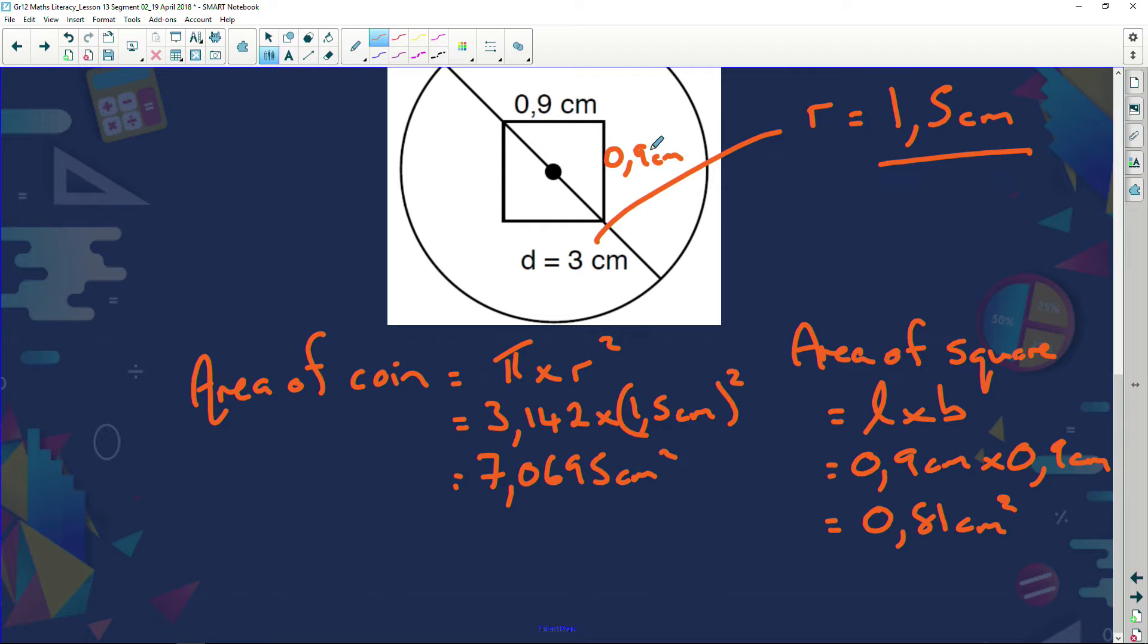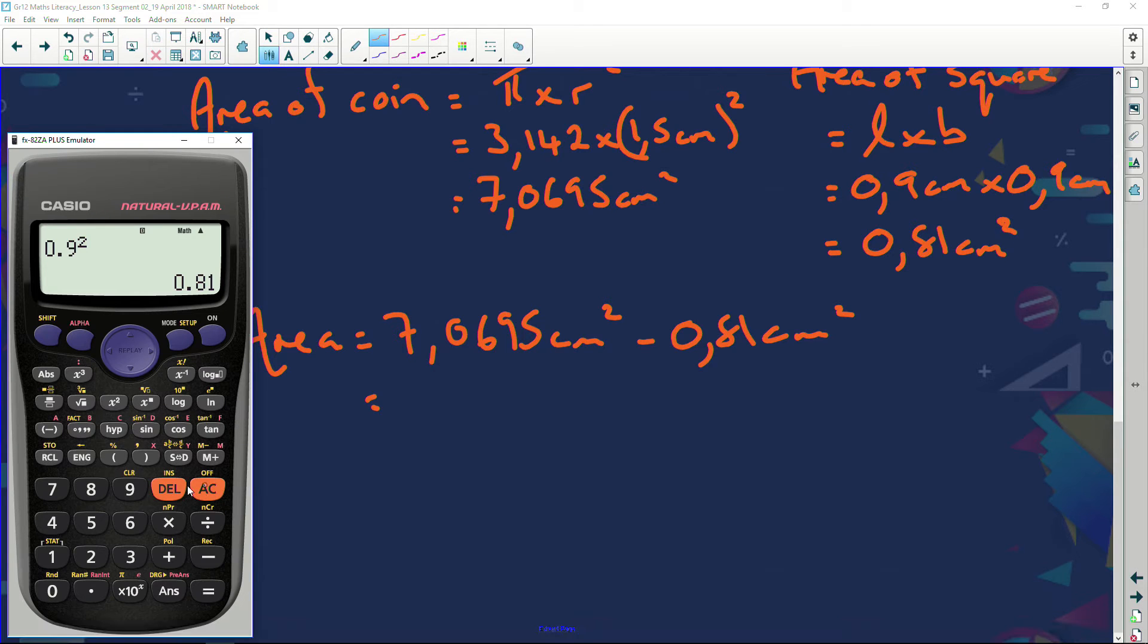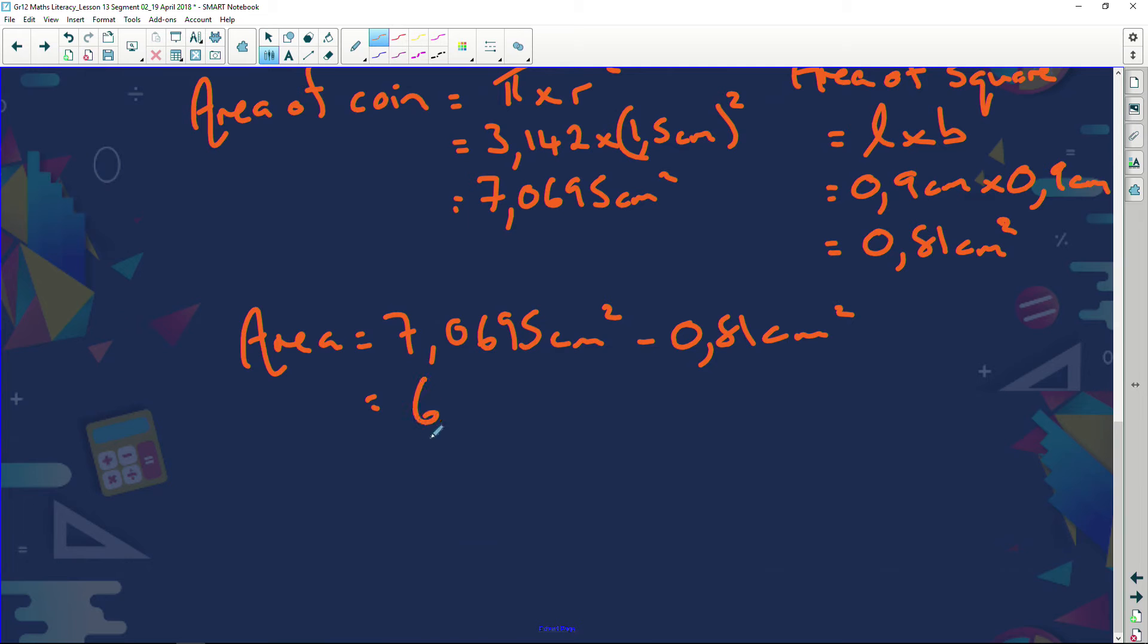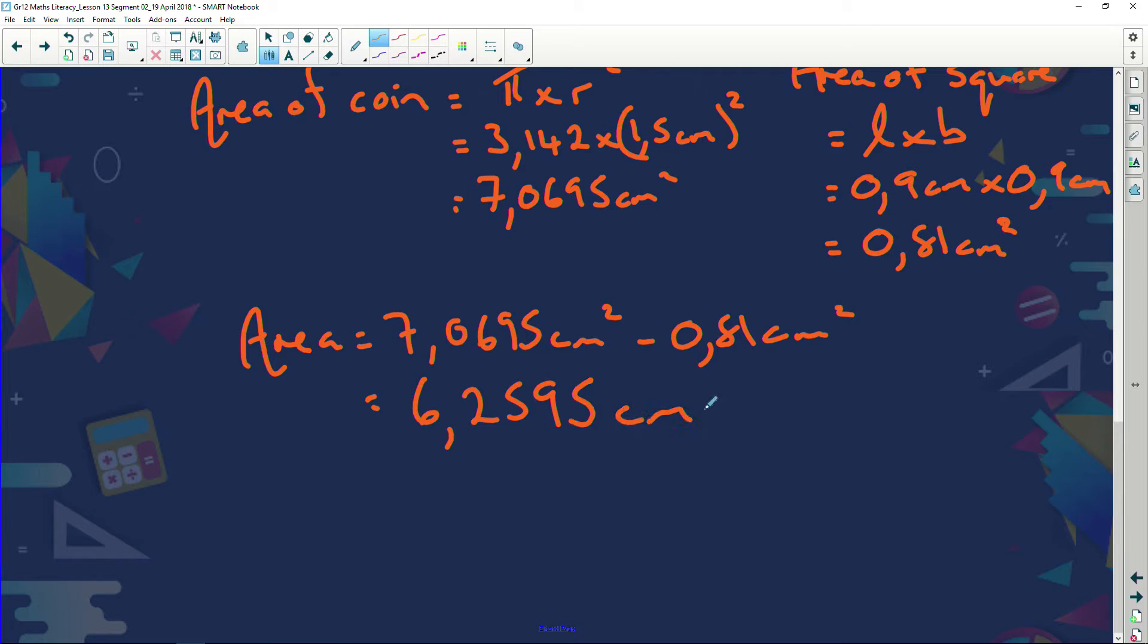Right. So we've calculated the area of the circle. We've calculated the area of the square. Let's now calculate the area of the leftover coin. So we're going to say the total area, or area left, is going to be 7.0695 centimeters squared minus 0.81 centimeters squared. Calculator 7.0695 minus 0.81 equals. And my answer is 6.2595 centimeters squared.